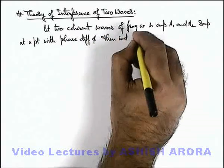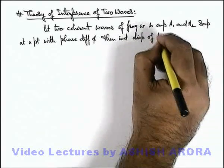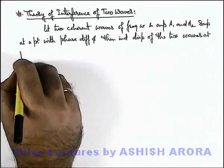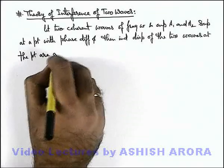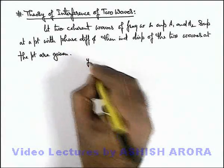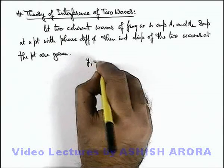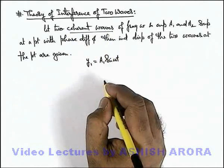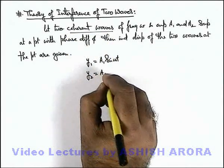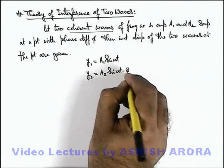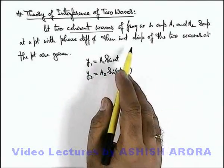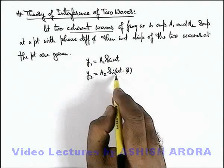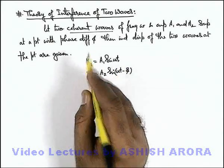The individual displacements of the 2 waves at the point of superposition are given as: y1 = e1 sine of omega t, assuming the 2 waves produce sinusoidal oscillations, and y2 = e2 sine of (omega t minus phi). Here, minus phi implies the second wave is lagging in phase with respect to the first wave by phase angle phi, and t = 0 is the time when the first wave arrives at the point of superposition.